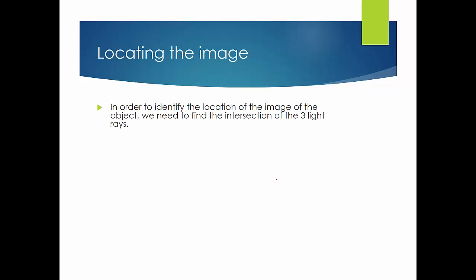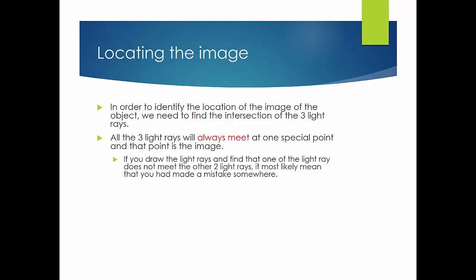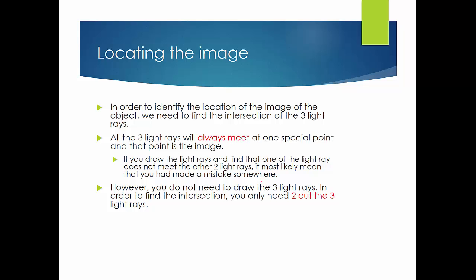To locate the image, we need the intersection of the three light rays. All three light rays will always meet at the same point, and that point is where the image of the object will be. If one ray doesn't meet the other two, a mistake has likely been made. You don't need all three rays — two out of three are enough to find the intersection — but drawing the third confirms the result.